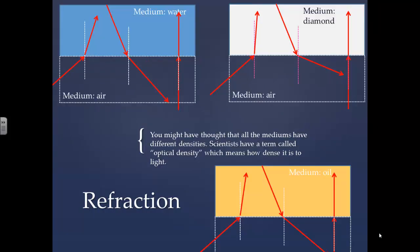You might have thought that all the mediums have different densities. Scientists have a term called optical density, which means how dense is it to light?